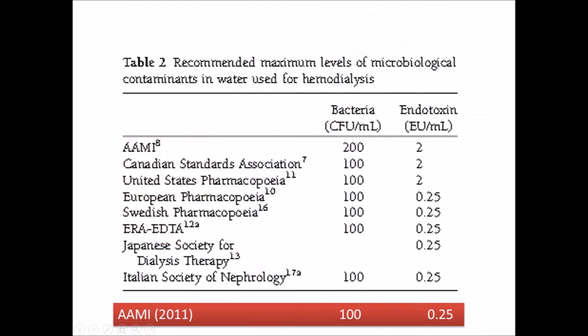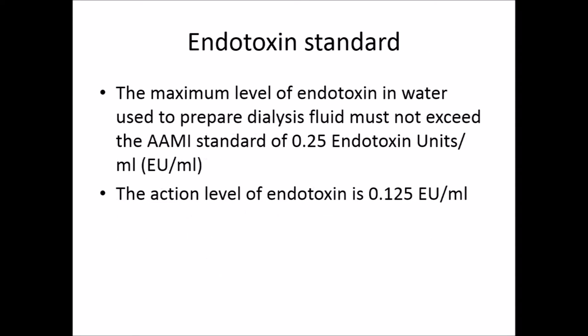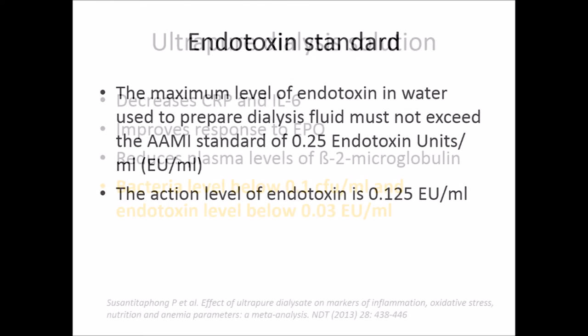The maximum recommended level of microbial contaminants follows AAMI standards 2011. The maximum number of bacteria in water used to prepare dialysis fluid should not exceed 100 colony forming units per ml, and the AAMI action level is 50 colony forming units. The action level is defined as the point at which measures must be taken to correct the potential source of contamination to remain in compliance. For endotoxin, the maximum level should not exceed 0.25 endotoxin units per ml, and the action level is 0.125 endotoxin units per ml.